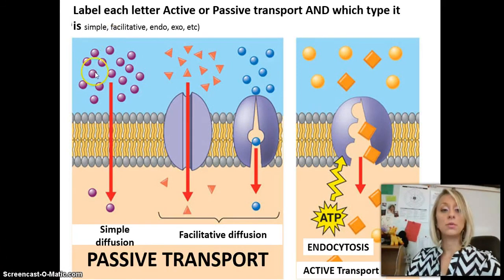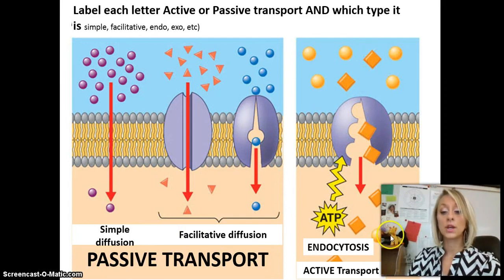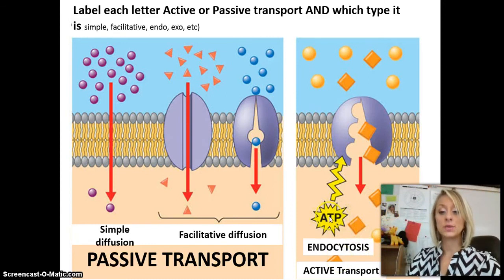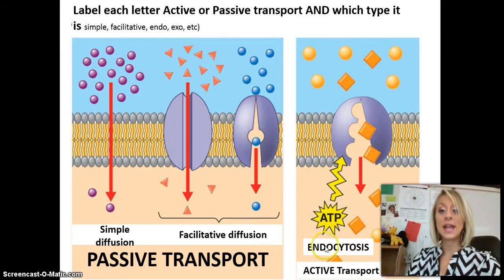Let's look at the answers. Moving from high to low without using a protein channel — that's simple diffusion. Moving from high to low but using a protein channel — that's facilitated diffusion. Moving from a low amount of molecules to an area with a high amount — two molecules moving toward five — and you can see the lightning bolt indicating ATP is needed, so it must be active transport. And because these molecules are entering the cell, it's endocytosis.